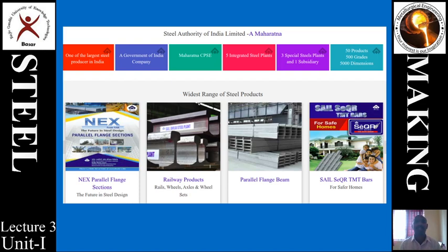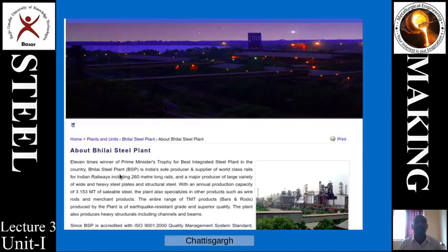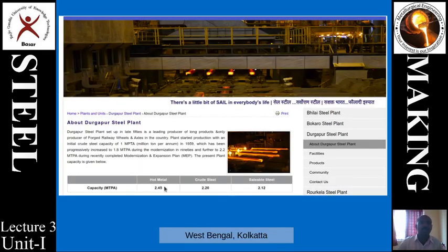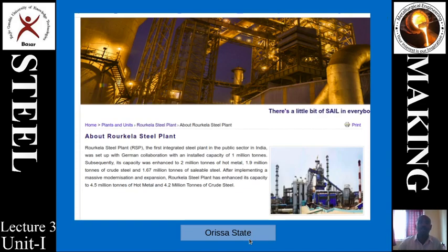A large group of industries under one umbrella is the Steel Authority of India Limited (SAIL), with its main branch in Maharashtra, producing a large range of products including train tracks, parallel beams, and building construction materials. SAIL's subdivided plants include: Bhilai Steel Plant in Chhattisgarh, Bokaro Steel Plant in Bokaro district in Jharkhand, Durgapur Steel Plant in West Bengal (Kolkata), and Rourkela Steel Plant in Odisha.